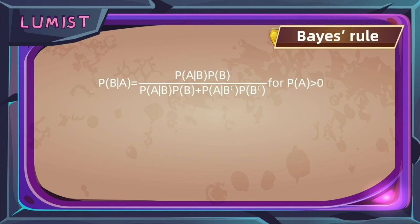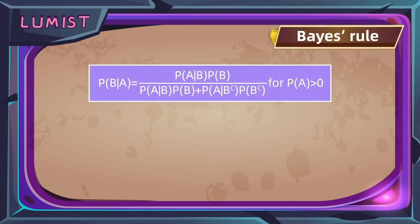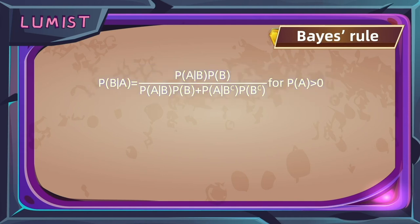And now introducing Bayes' rule. This is the general formula. It looks pretty daunting, but don't be afraid — it will easily make sense when we go over the intuition. Let's start with a quick exercise using properties of conditional probability to see how we got this formula.